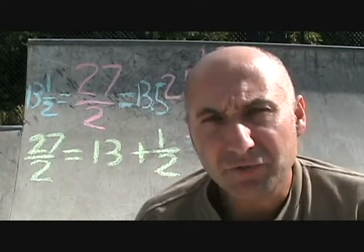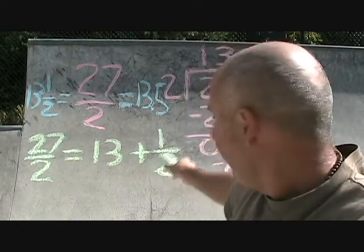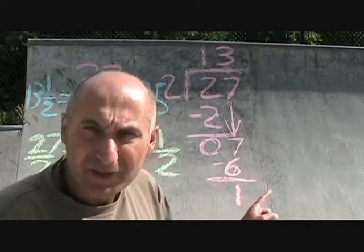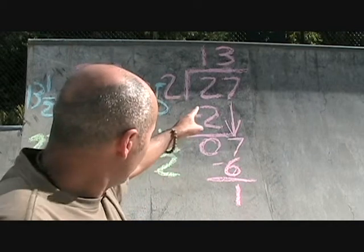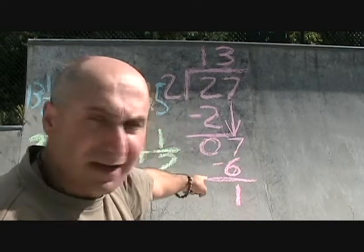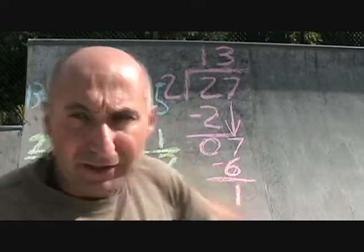So the way you could write down 27 divided by 2 is equal to 13 plus 1 over 2, which is what we can derive from here. 27 divided by 2 is going to be 13 plus 1 divided by 2, by your denominator.